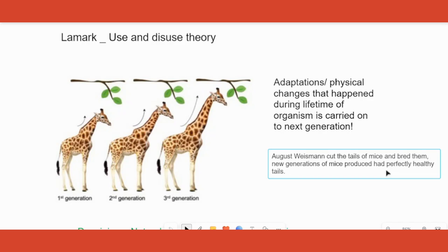How did Weismann disprove it? He took some mice, cut off their tails, and then bred them with each other. He found that in the upcoming generations all the mice still had tails. This means that whatever adaptations an organism undergoes during its lifetime are not passed on to the next generation, as Lamarck claimed. So that theory was disproved.